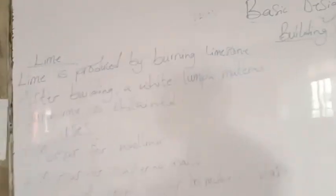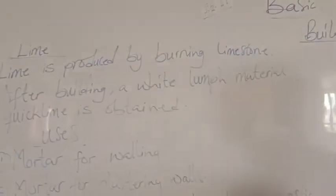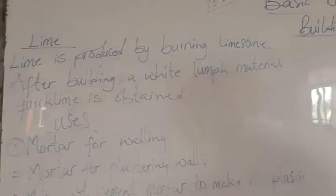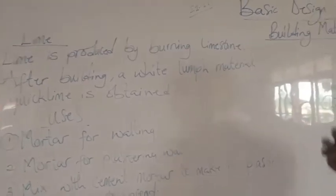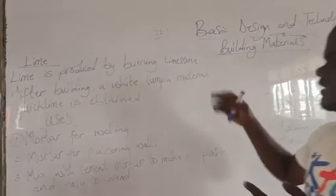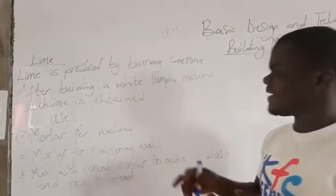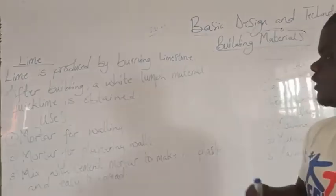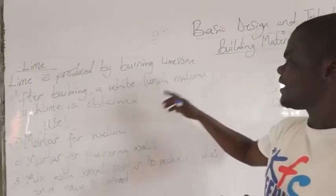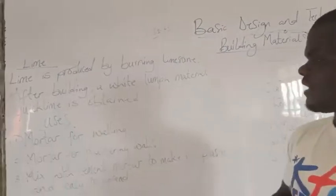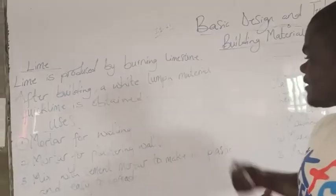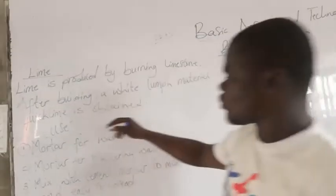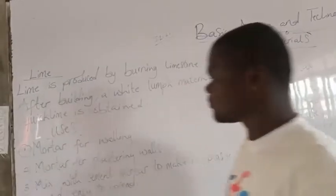Now I want to talk about lime. Lime is produced by burning limestone. When you burn limestone you obtain lime. After burning the limestone, a white lumpy material called quicklime is obtained.